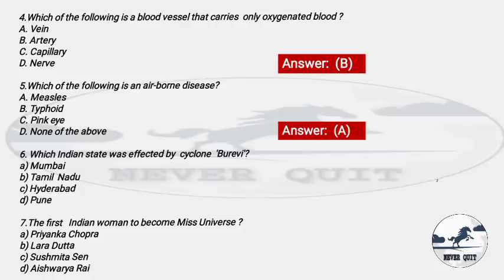Question 6: Which Indian state was affected by Cyclone Burevi? Options: A) Mumbai, B) Tamil Nadu, C) Hyderabad, D) Pune. The right answer is option B — Tamil Nadu. Cyclone Burevi hit Tamil Nadu and caused considerable damage.